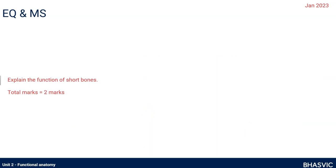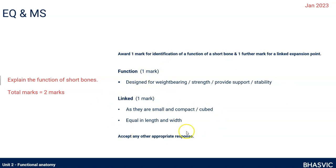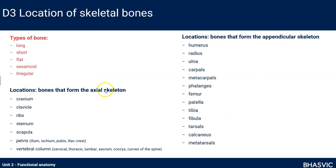The last exam question asks you to explain the function of short bones for two marks. The function of short bones is to be strong, to provide support and stability, and to deal with lots of weight. To earn the other mark, link it to their structure: they are cuboid in shape, small and compact, with the same length, width and height. So it's asking what's their job and how can they achieve that job. This covers the five types of bone within D3 of the skeletal system.